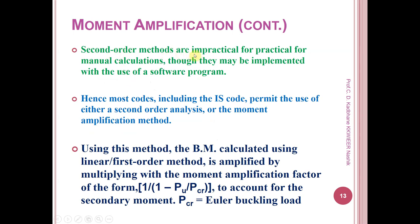Second-order methods are impractical for manual calculations, though they may be implemented using software. Hence, most codes including the IS code permit the use of either a second-order analysis or the moment amplification method. Using this method, the bending moment calculated using the first-order method is amplified by multiplying with the moment amplification factor of the form: 1 divided by (1 minus Pu divided by Pcr), where Pcr is the Euler buckling load, to account for the secondary moment.